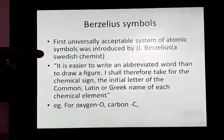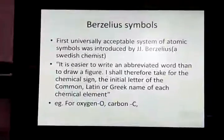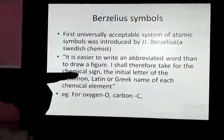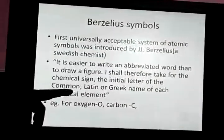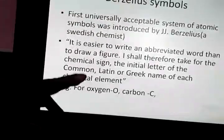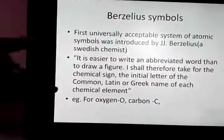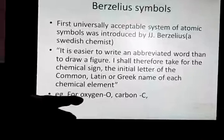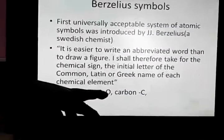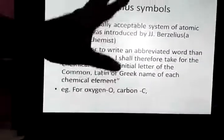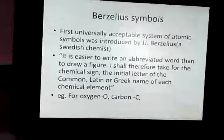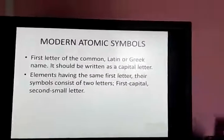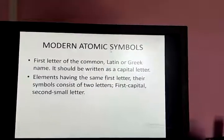Berzelius stated: 'I shall therefore take for the chemical sign the initial letter of the common Latin or Greek name of each chemical element.' So for oxygen, he takes the first letter O, and for carbon, the first letter is C. From these findings we come to talk about modern atomic symbols, which are universally accepted now.